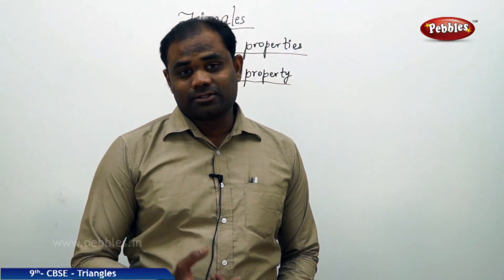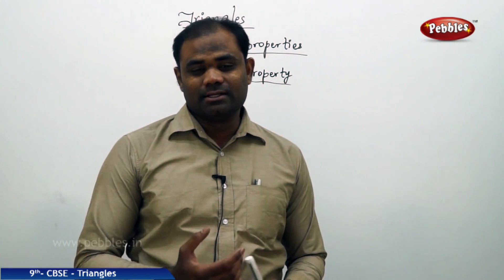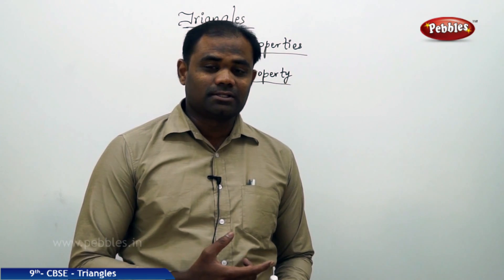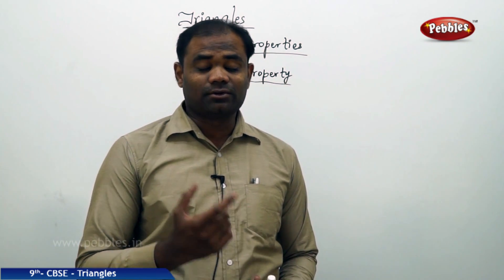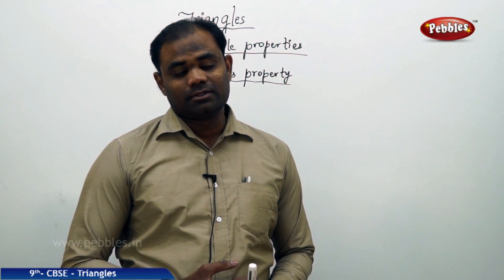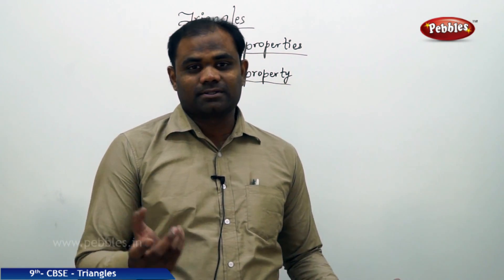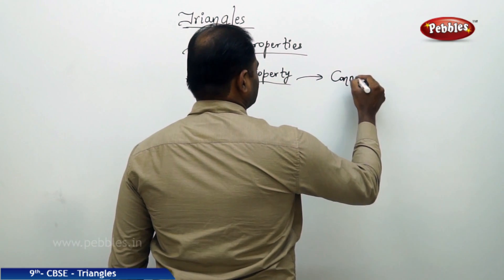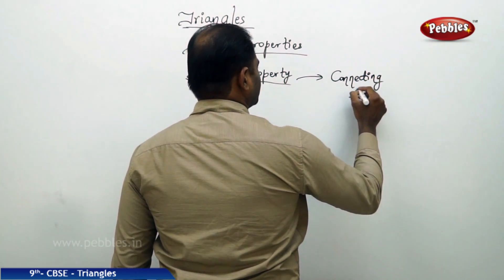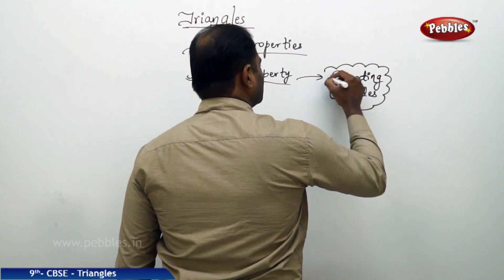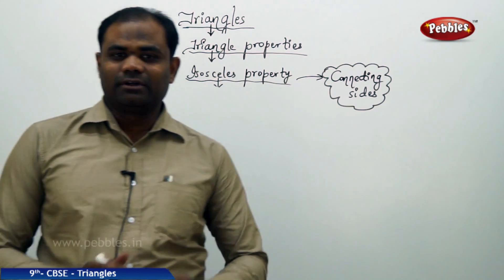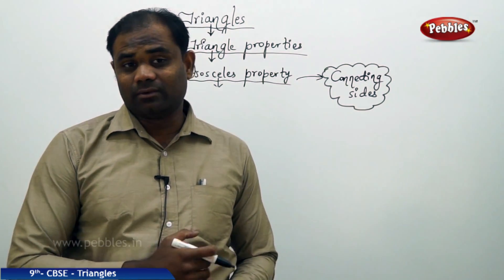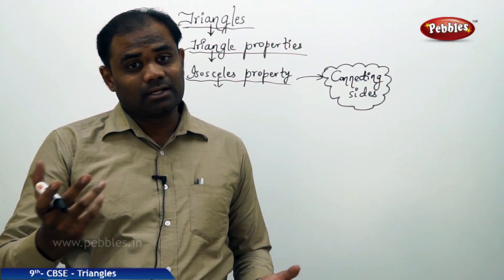Now that we've discussed the isosceles property connecting sides to angles, let's see the isosceles property which connects the angles to the sides. This is something like the reverse process of the previous discussion — isosceles property connecting the sides of the triangle. As we have seen, when two sides are equal their corresponding angles are equal; now let's see what happens if the two angles are equal.